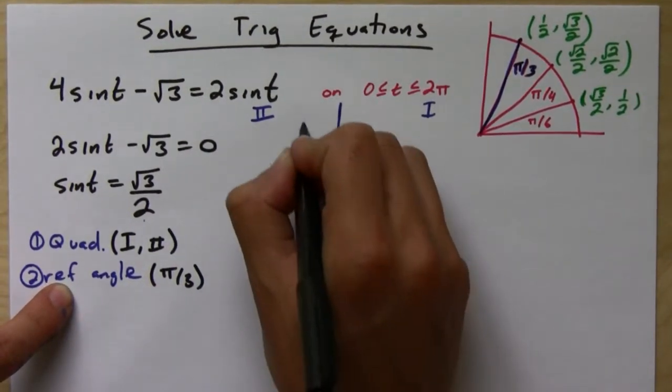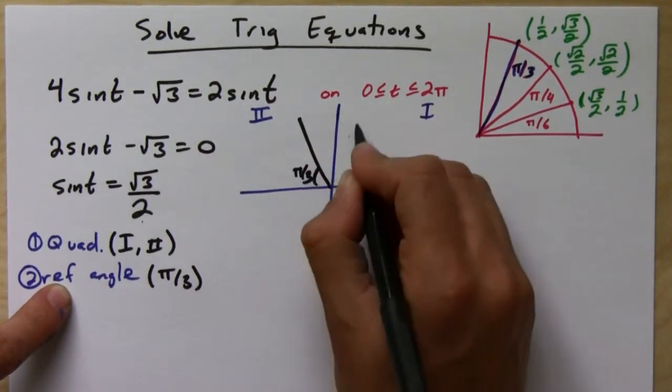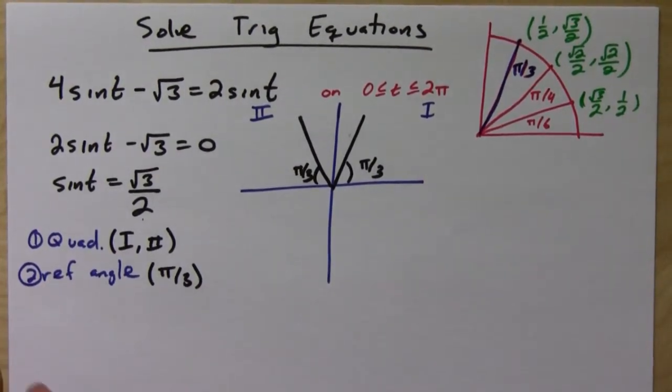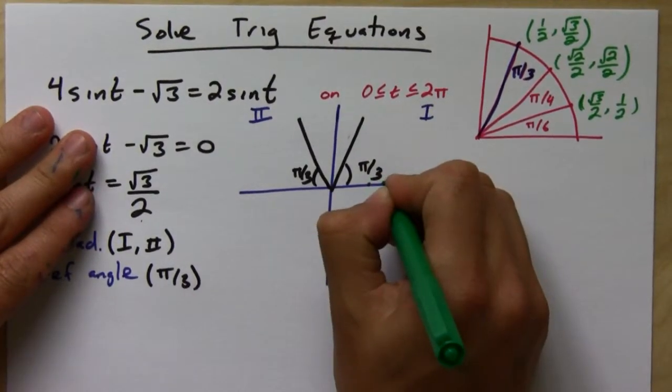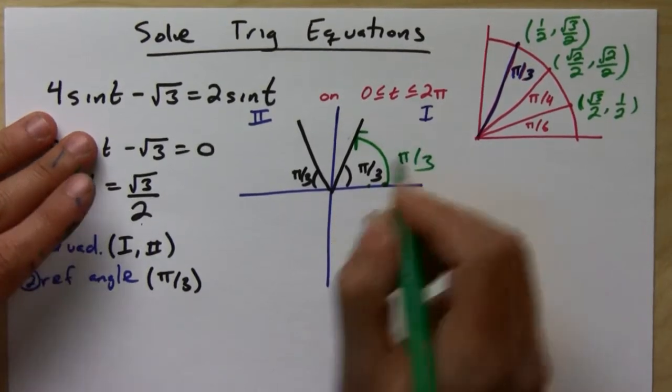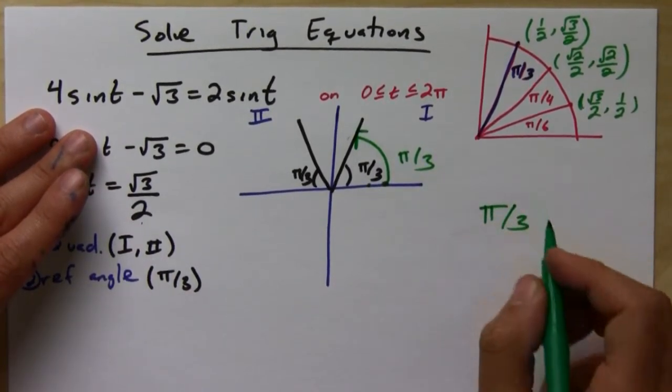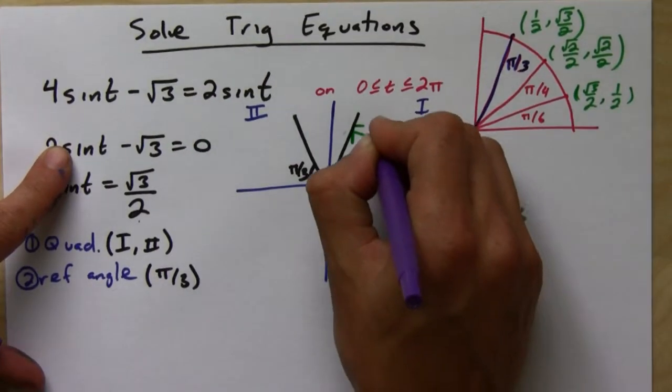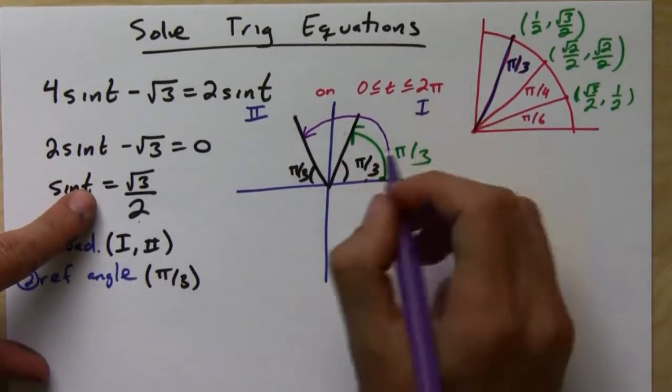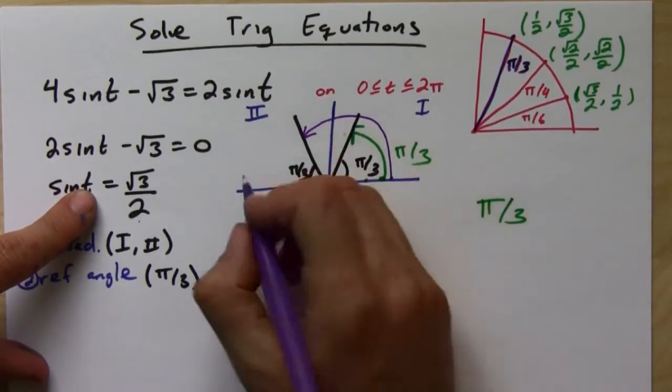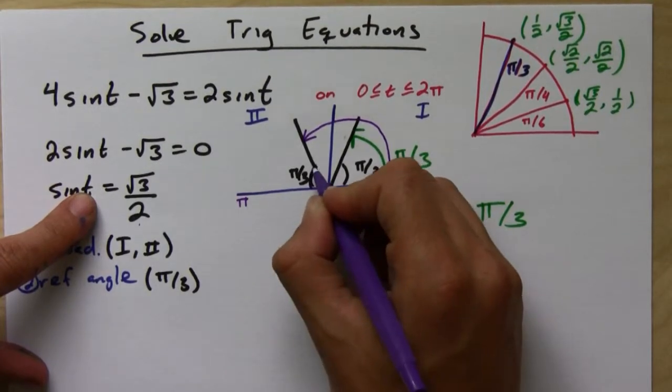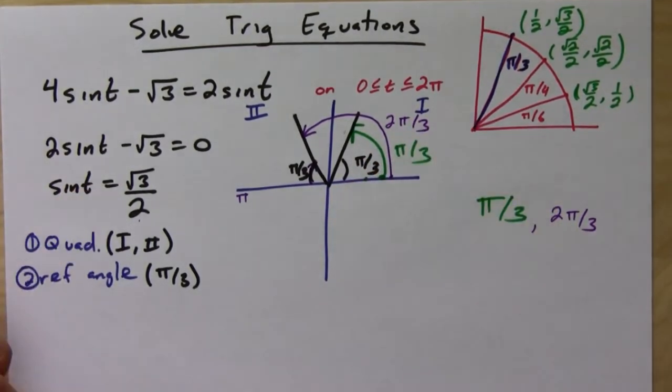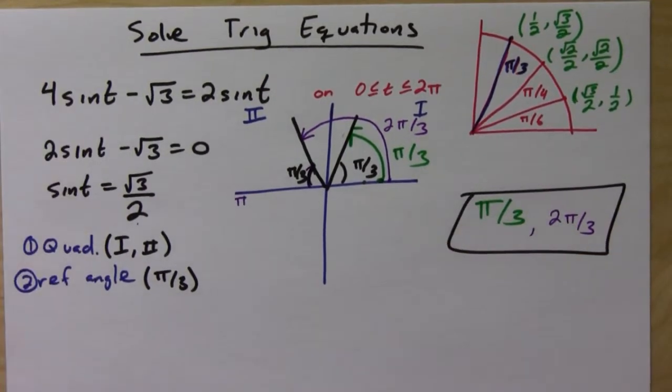So what you do is you draw the reference angle on the second quadrant, and then you draw the reference angle on the first quadrant. And then you figure out what those angles are from 0 to 2 pi. So if you start right here, you go to this first one. The first one is pi over 3. So this is your first solution, pi over 3. And then the second one is you start again from here, and then you go to the next one. Well, this is, well, it's 2 pi over 3. But the way to figure it out is if you know this is pi and you go backwards, in other words, subtract pi over 3, you would get to 2 pi over 3. And that's it. That's your answer.